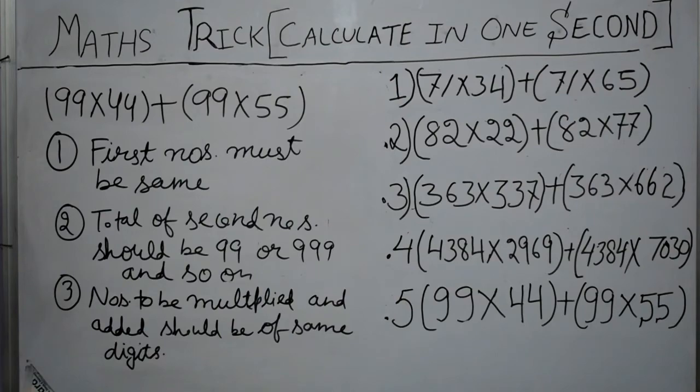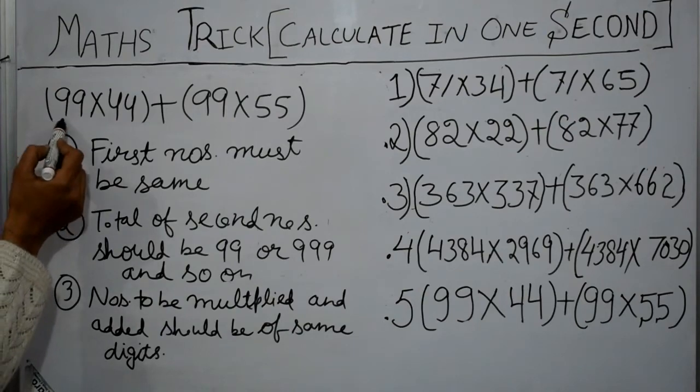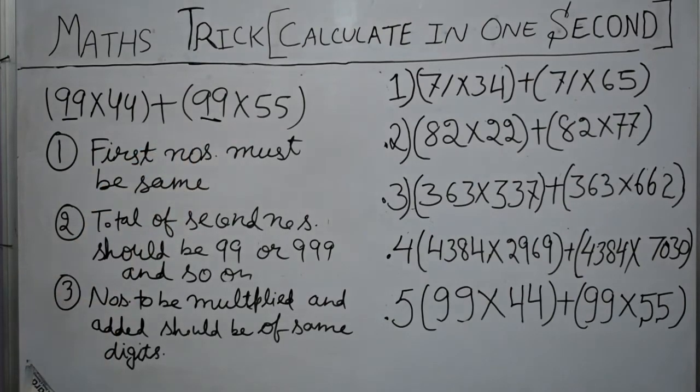This trick will work only if these three conditions are satisfied. First one is first numbers. In this case 99 and 99 are first numbers, they must be same. You can see that in all our five sums we have same first numbers. This is the first condition, that first numbers must be same.